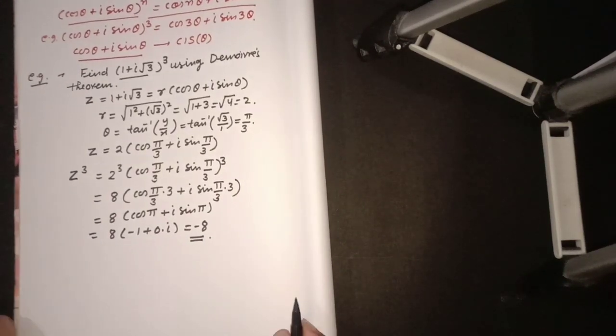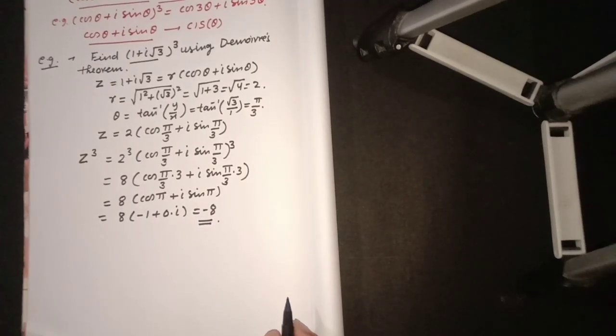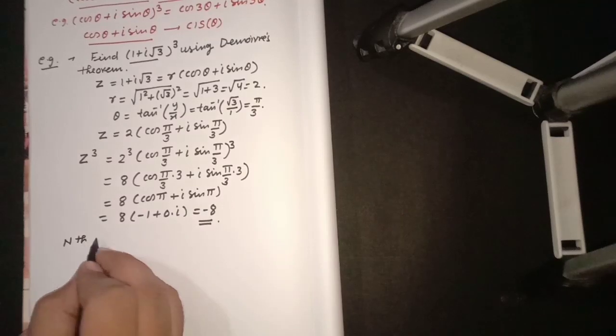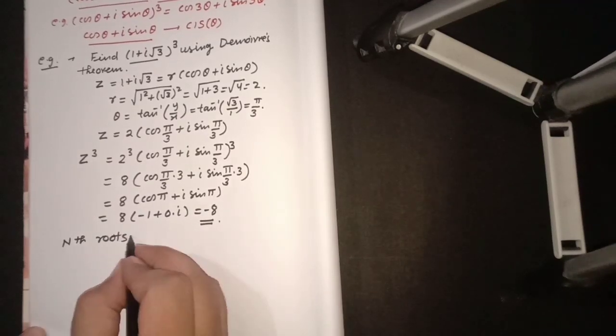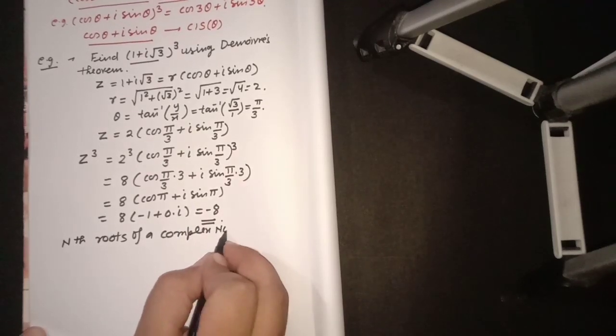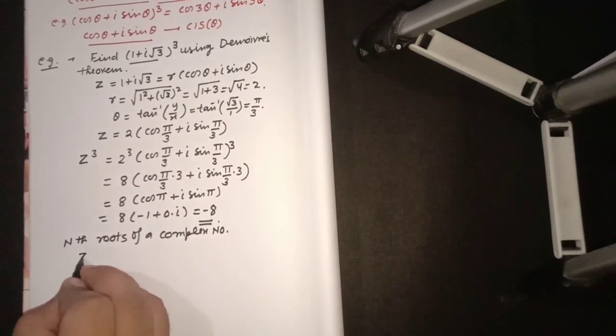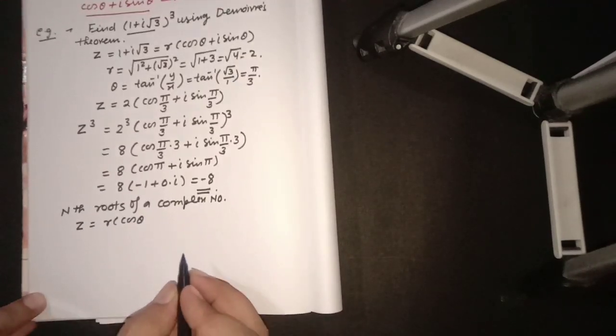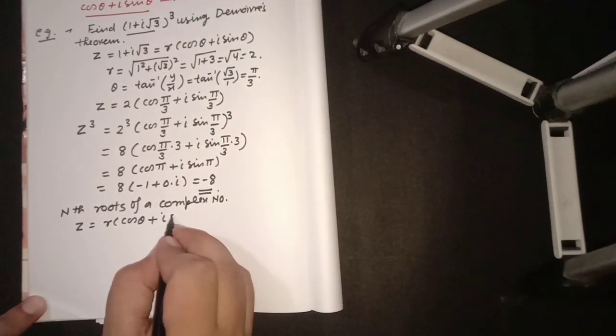Now one more point: if nth roots of a complex number we have to evaluate, let z = r(cos θ + i sin θ).